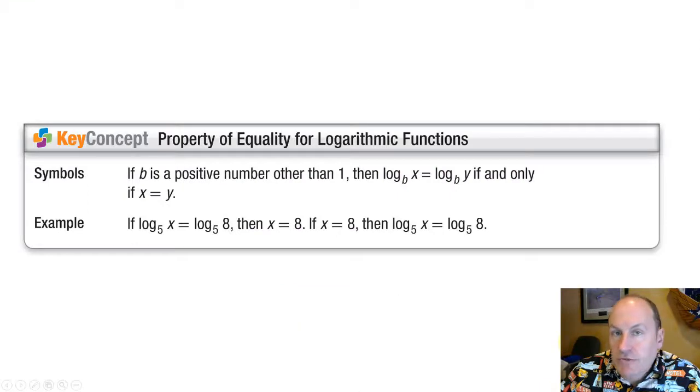To do that, we're going to use a couple of properties. The property of equality for logarithmic functions is that as long as the base b is other than 1 and is a positive number, then log base b of x equals log base b of y if and only if x equals y. And this is very analogous to the exponential property of equality.